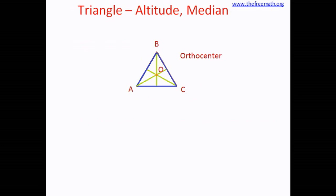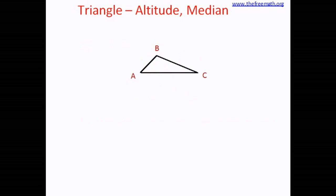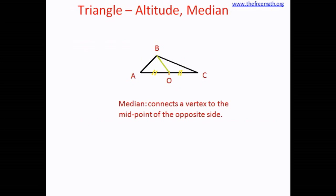Now let's see what a median is. Consider this triangle and the side AC. Let's consider a midpoint of AC and call it O. That means AO and OC are of the same size — O is the midpoint of side AC. If you connect vertex B to O, that segment is called a median. So if you connect a vertex to the midpoint of the opposite side, that segment is called a median.